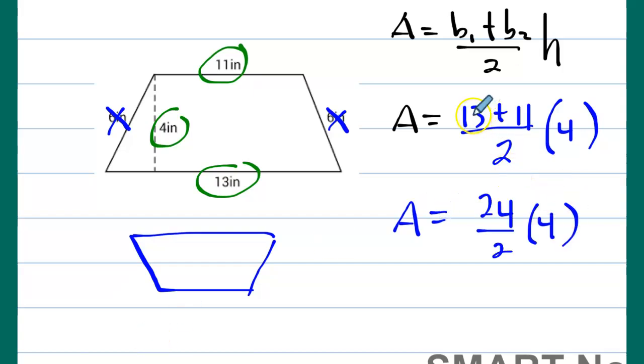So we know that 13 plus 11 is 24 divided by two. You could also divide 24 divided by two times four, or you could just cancel. It's up to you which you want to use.